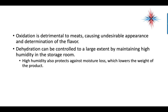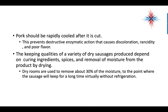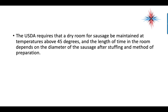Oxidization is detrimental to meats — it causes undesirable appearances and deterioration of flavor. Dehydration can be controlled by maintaining high humidity in the storage room, which also protects against moisture loss that lowers the weight of the product. Pork should be rapidly cooled after it's cut to prevent destructive enzyme action that causes discoloration, rancidity, and poor flavor. The keeping quality of dry sausages depends on curing ingredients such as spices and the removal of moisture by drying. Dry rooms remove about 30% of moisture so the sausage will keep for a long time, virtually without refrigeration. The USDA requires that a dry room for sausage be maintained above 45 degrees, and the time in the room depends on the diameter of the sausage and the method of preparation.